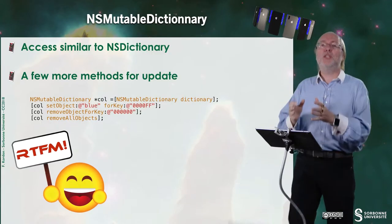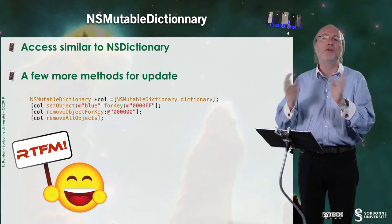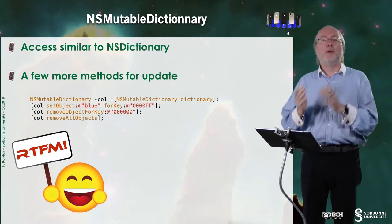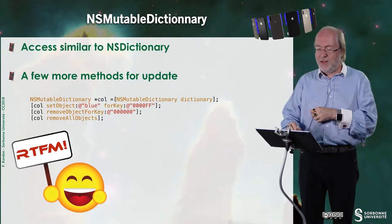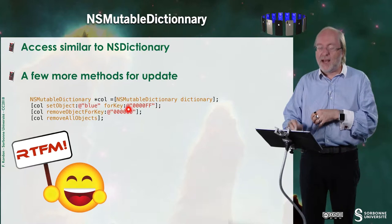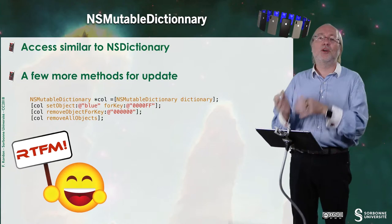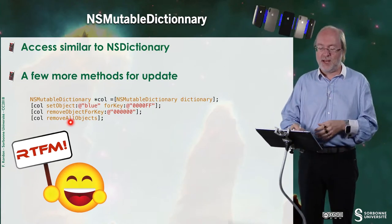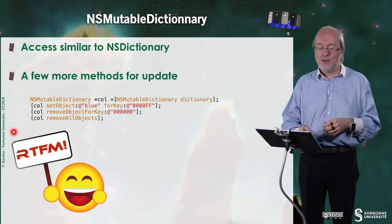NSMutableDictionary, which is the variant, the mutable variant, of NSDictionary. So for the access, no change compared to dictionary. But you have a few more methods for the updating of a variable. So here you still have the dictionary. I can create an empty dictionary. And I can set an object and a key. Okay? I can remove the object having a given key. I can remove all objects, as you can see, there and there. Okay? So you get an idea of it. The rest is located in the fantastic manual.